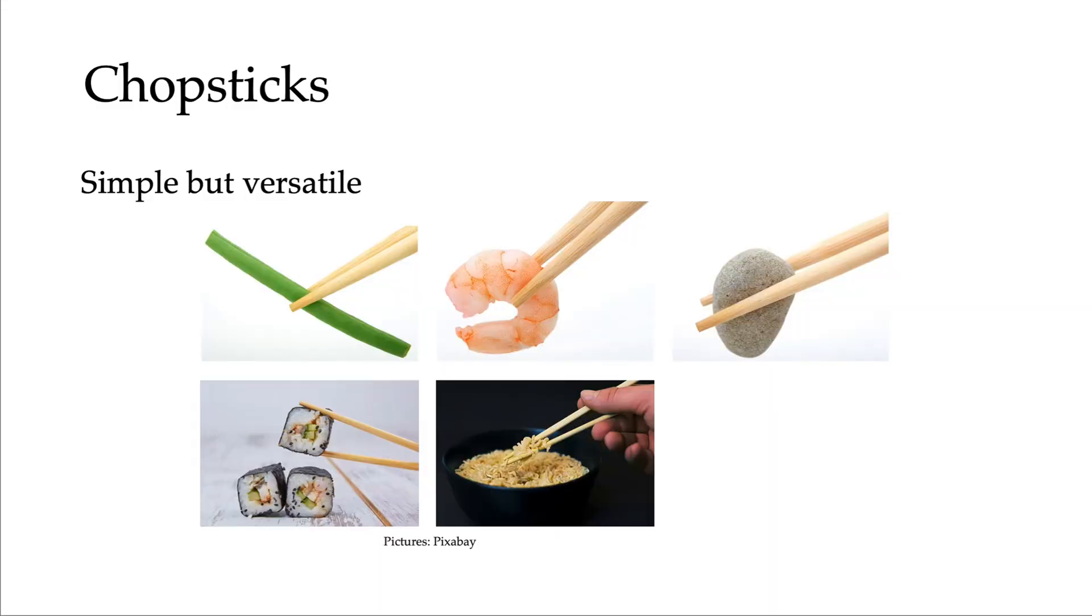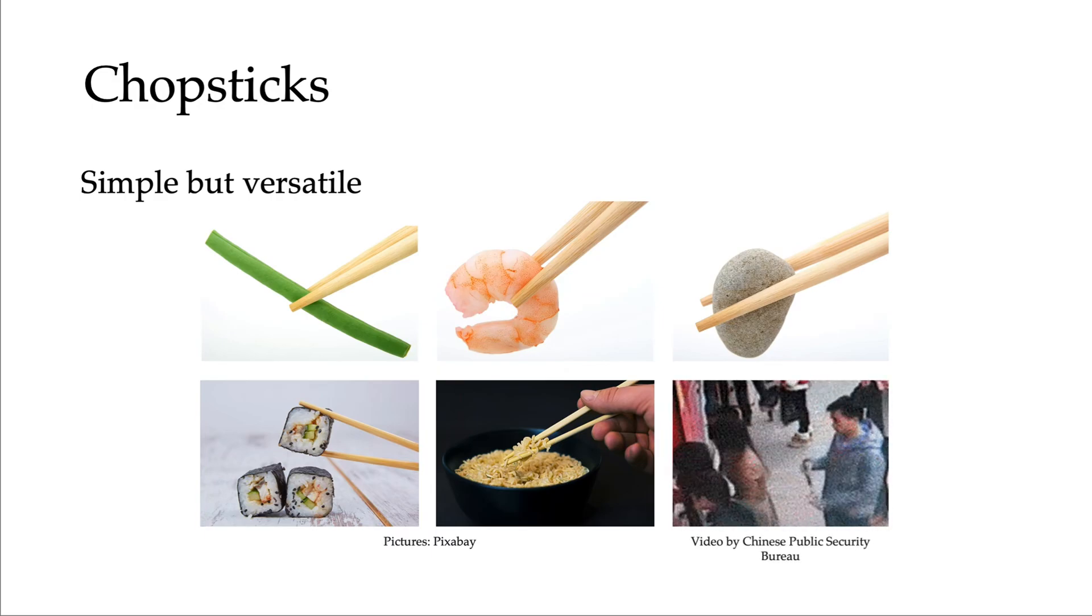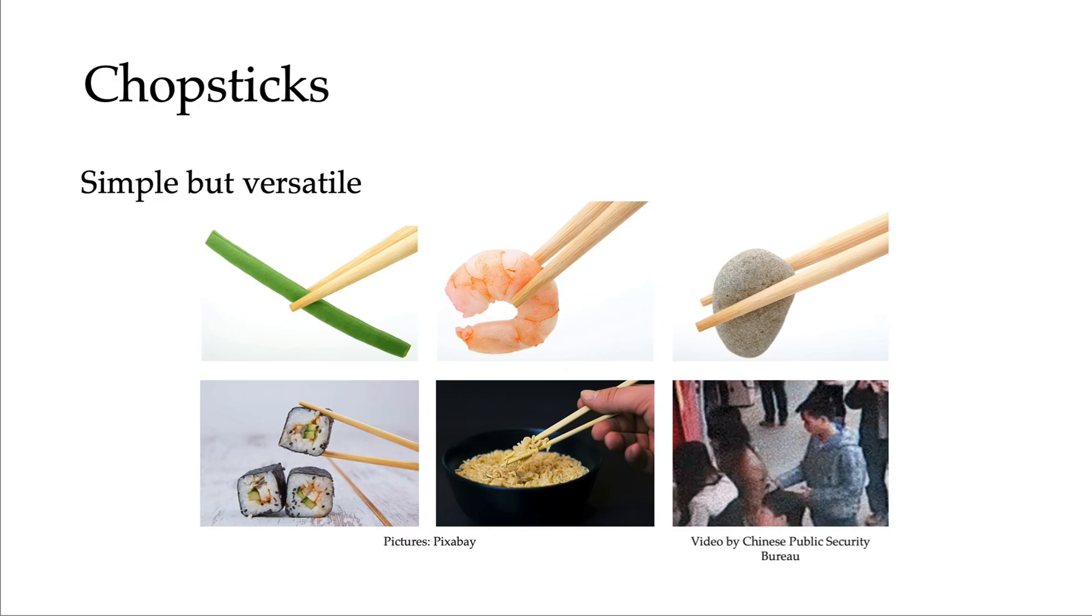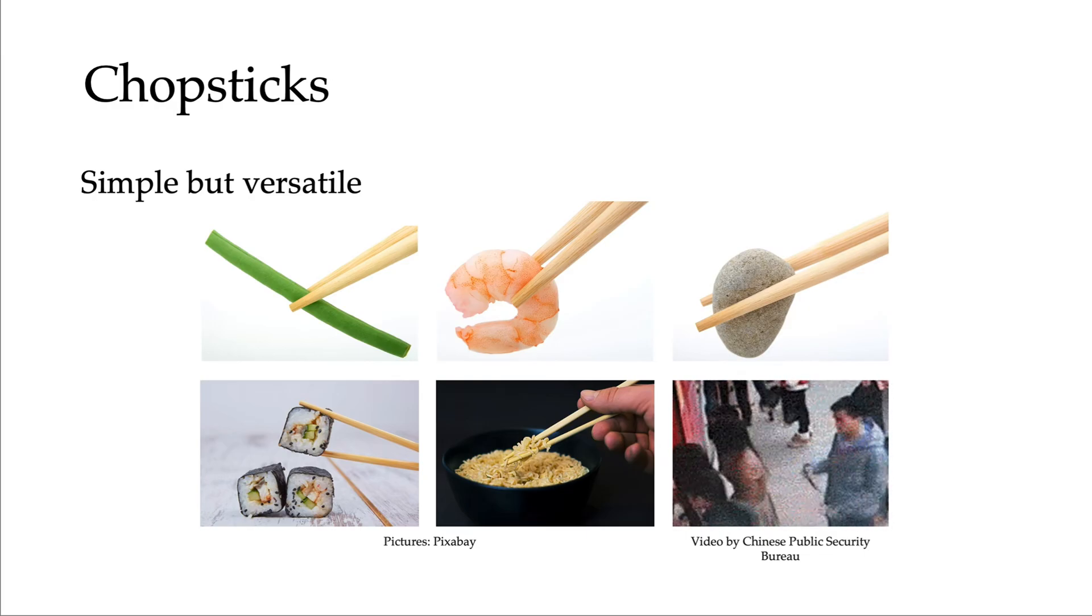So first, you might wonder, why chopsticks? We focus on chopsticks as an example of simple tools for four reasons. First, designing a simple tool that is also versatile can be a challenging task, but chopsticks are both. The shapes of chopsticks are easy to manufacture, model, and control. Humans have demonstrated versatile usage cases with chopsticks picking big or small, hard or soft items. One wisely dexterous human even uses chopsticks to pick up cell phones.